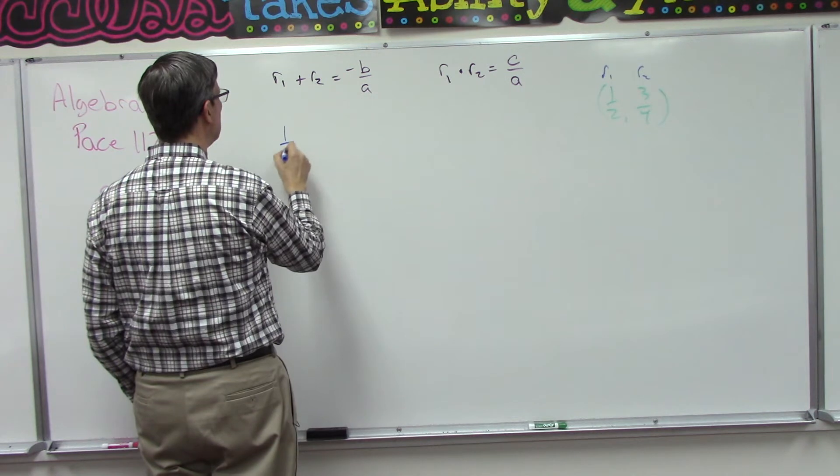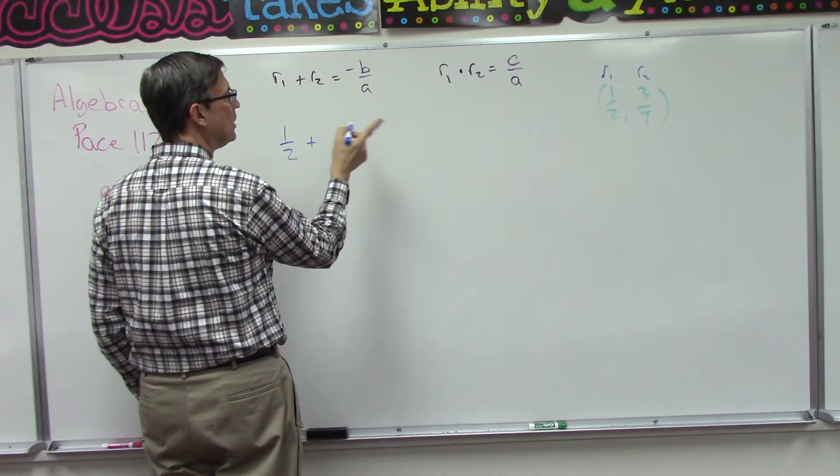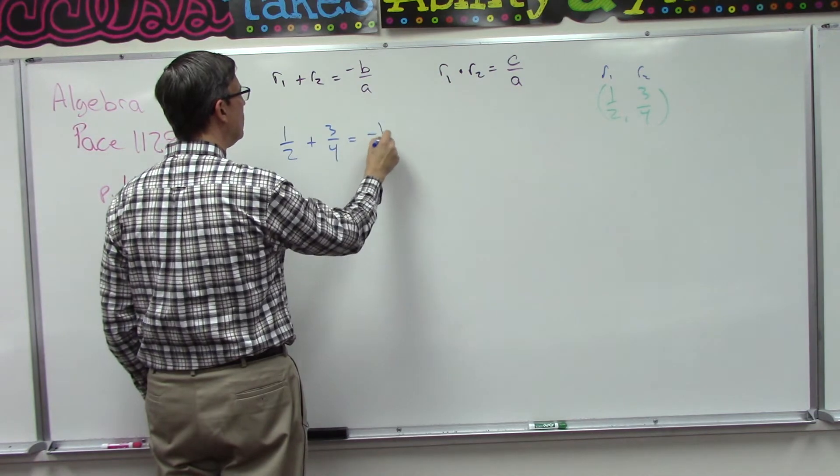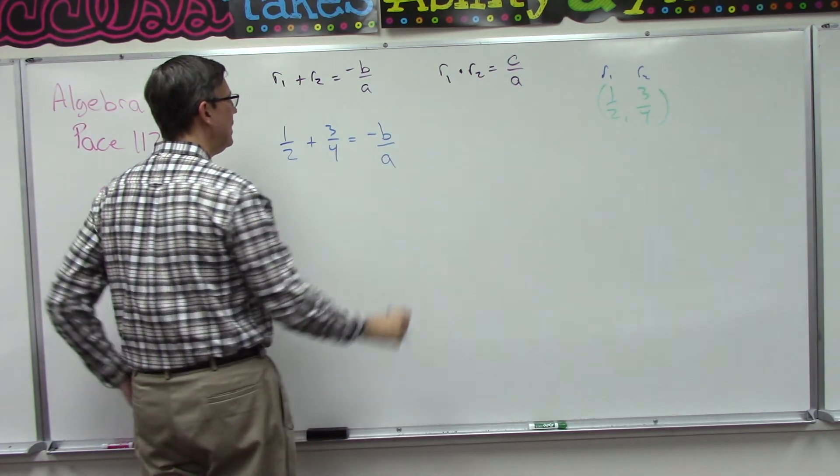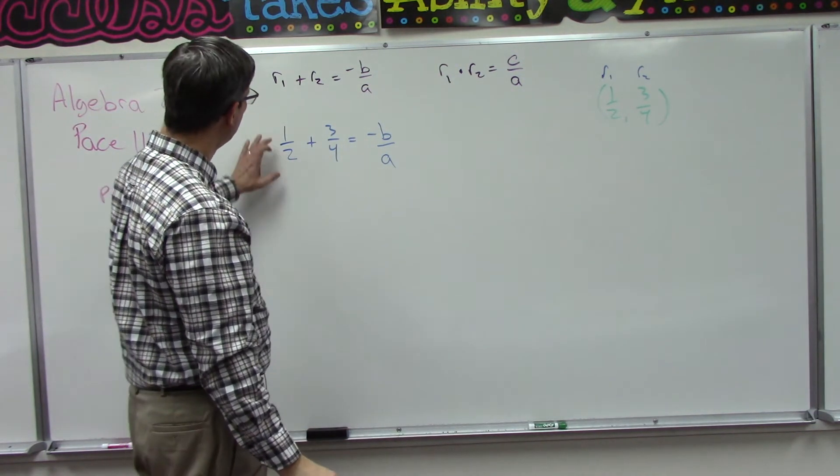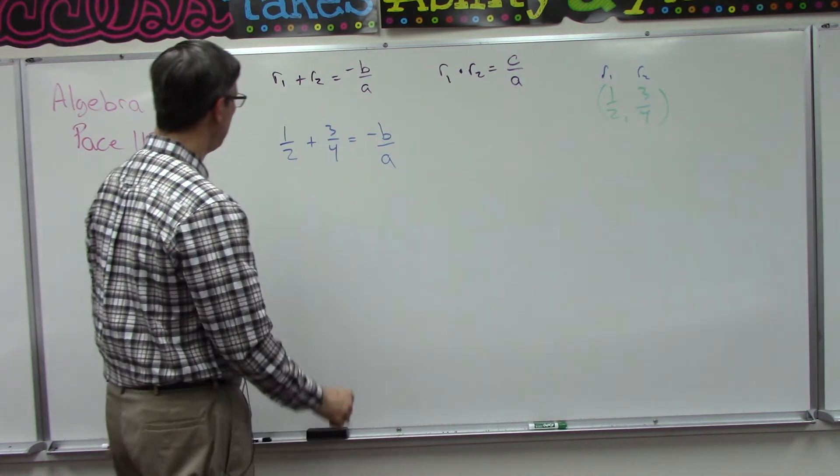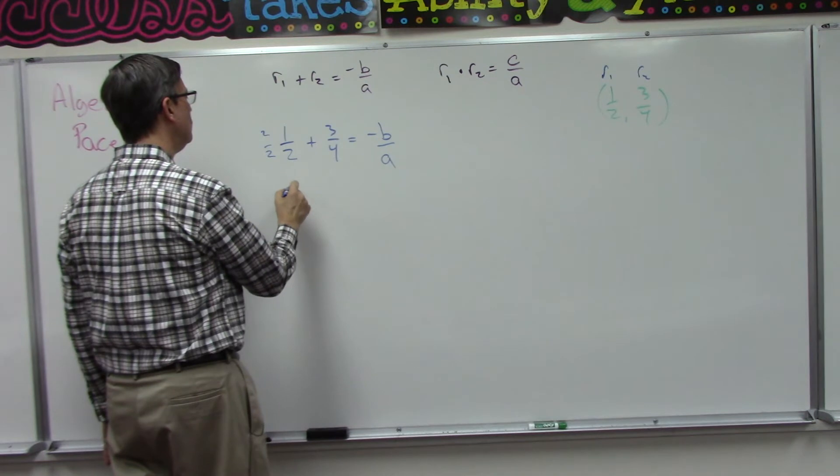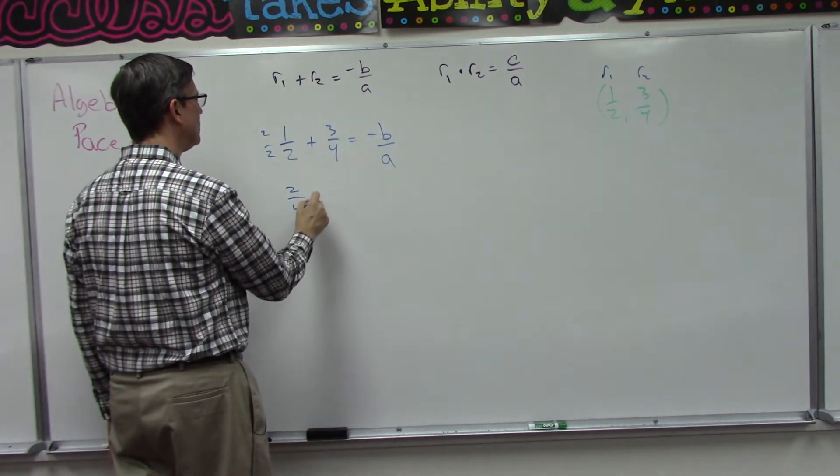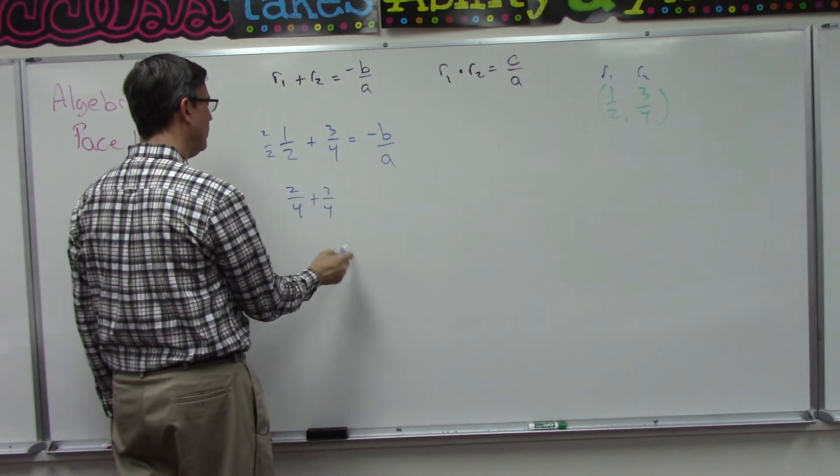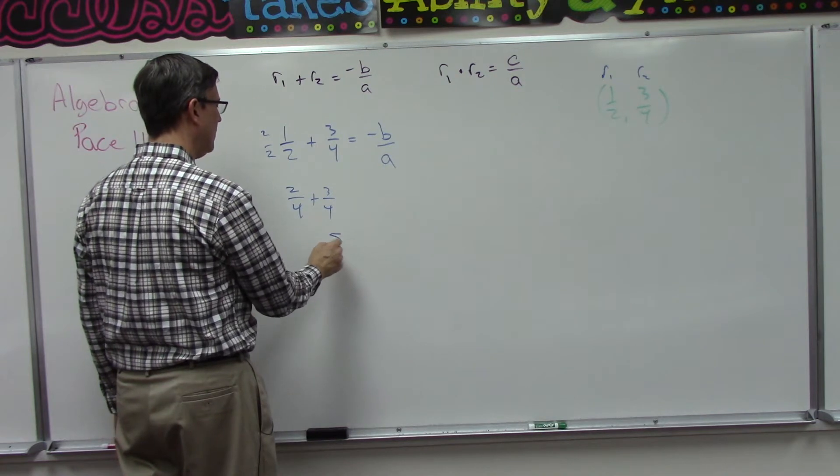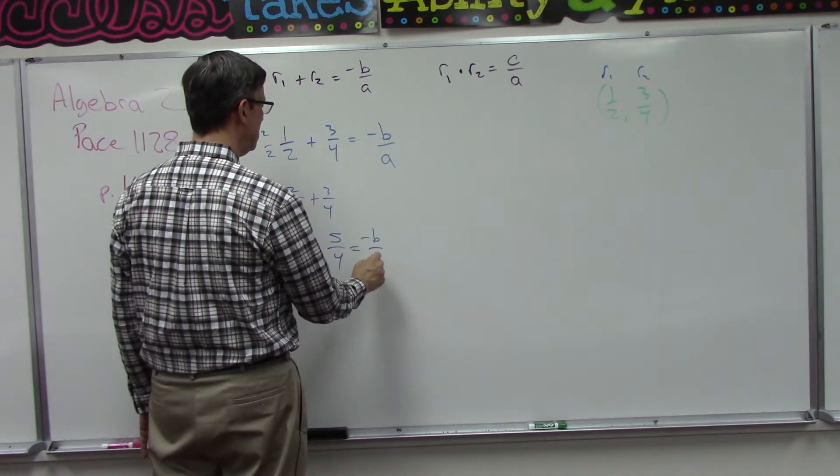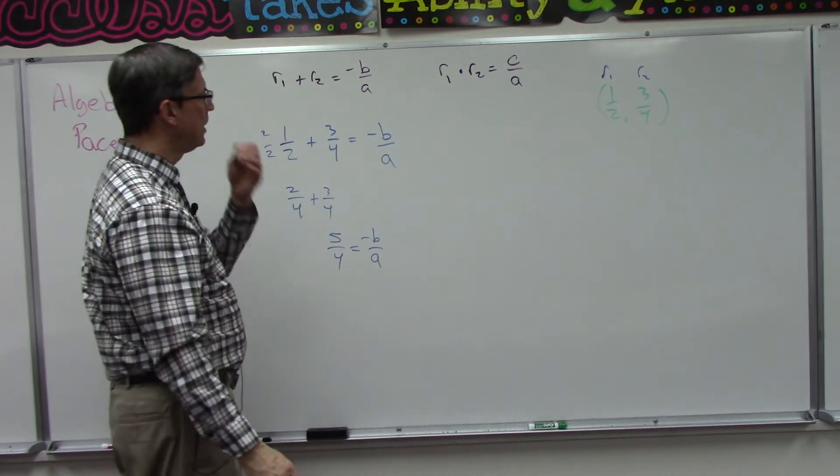Root one is one half plus root two is three fourths, and when we solve that we will have negative b over a. Well, what do we get here? We have to get a common denominator, so multiply top and bottom by two, so I have two fourths plus three fourths, right? So five fourths equals negative b over a. Now hold on to that, we're almost done.